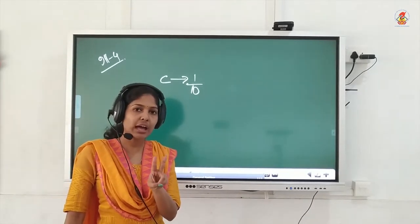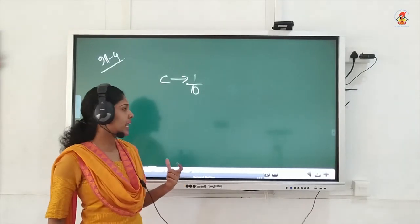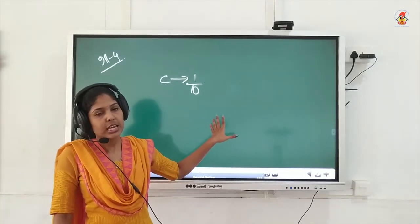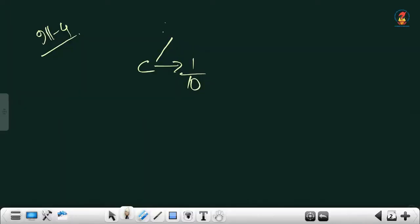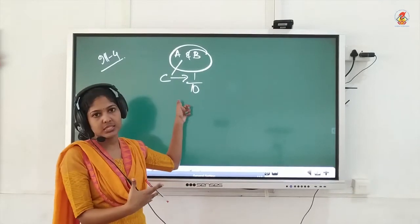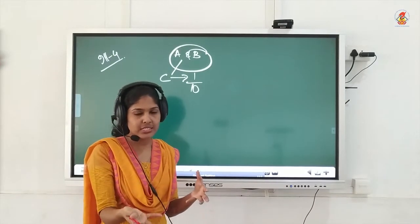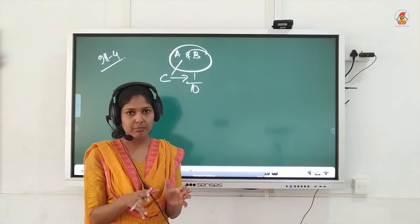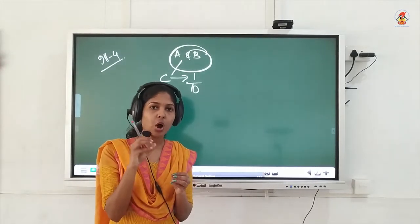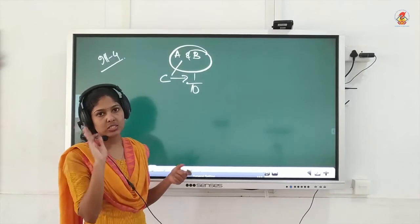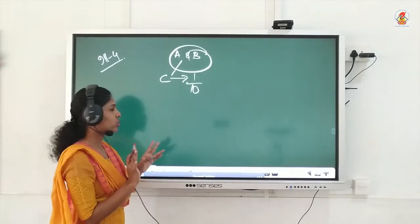You cannot assume the total share is 1 in this question — that method only applies when you have just two pieces of information: the old ratio and the new partner's share. Whenever the sacrificing proportion is given, you must apply the formula: new share equals old share minus surrendered share. If the sacrificing ratio is given in the question, apply the formula; otherwise, assume the total share is 1.